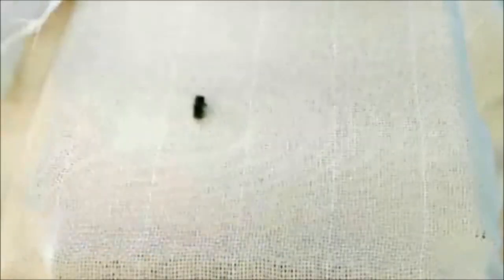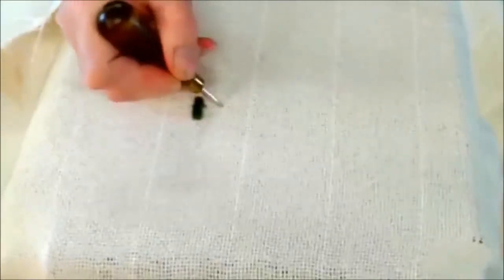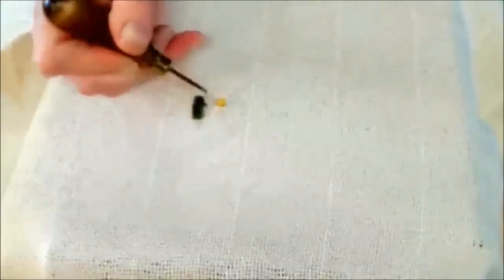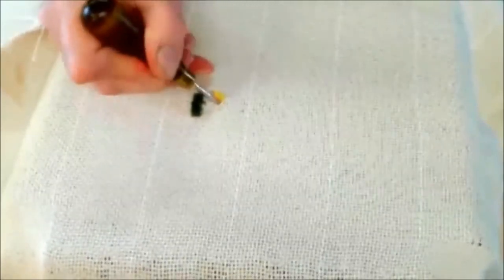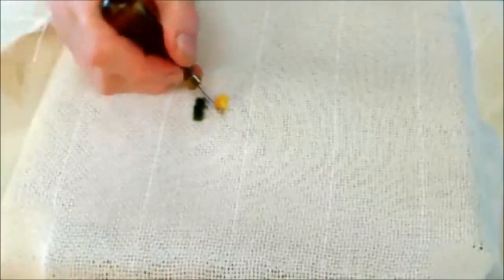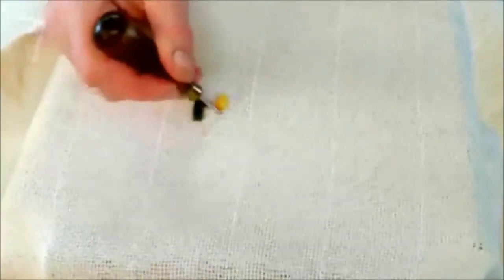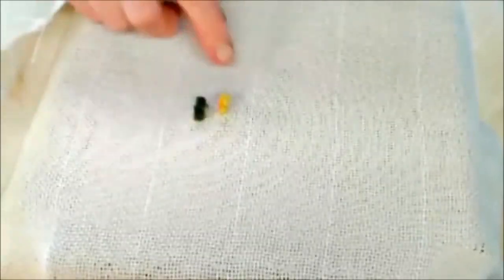You can do the same thing with yarn. Here I have yarn underneath. I push my hook through. My left hand hands me the yarn and I pull it up. I reach down, I grab the yarn and I pull it up and that is all there is to hooking. It's just a matter of practice to get your loops the same height.